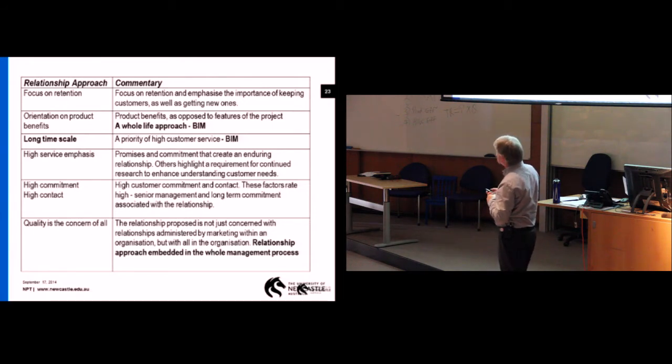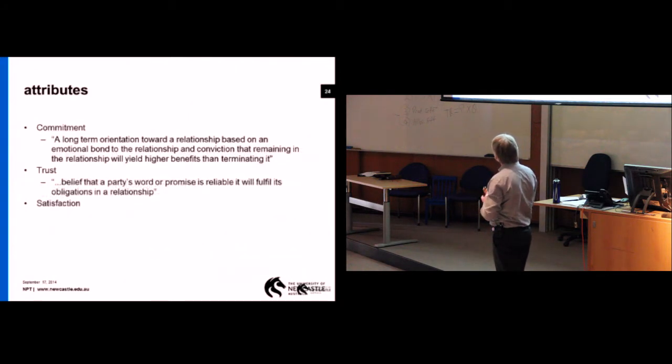On the left there, you've got a relationship approach. You can see there's a focus on client retention. There's a focus on commitment. There's a focus on quality. On the right-hand side, you can see a commentary on what it is about. The BIM aspects that I've added in in more recent times. So you can see that to build a relationship approach, there are several attributes that you should focus on. My question in this bit of research was, do construction people actually review that sort of research?